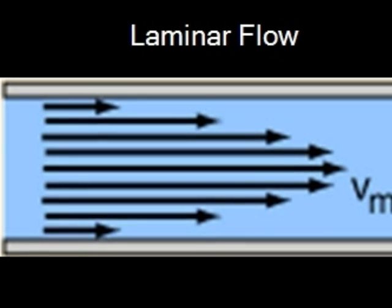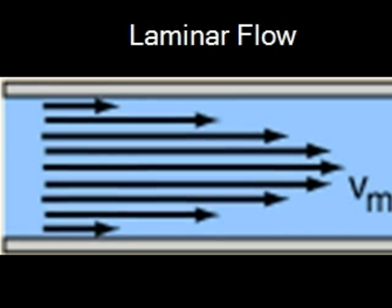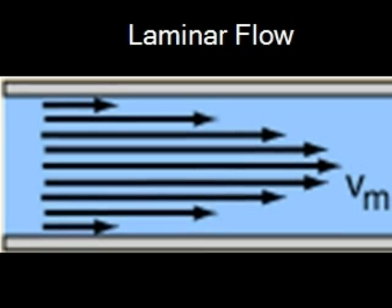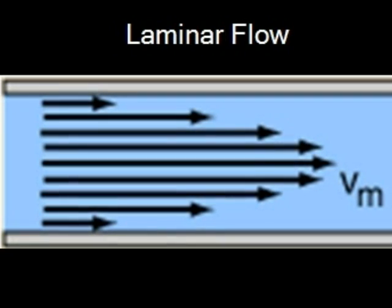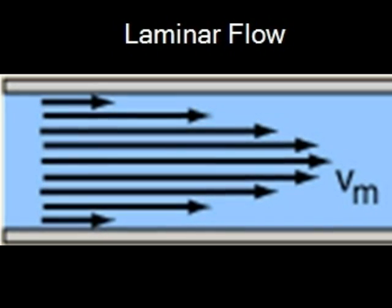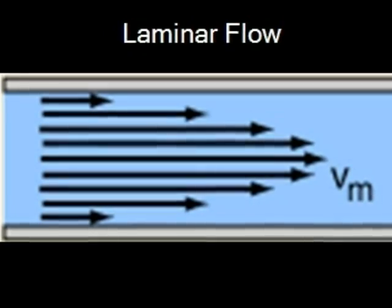Laminar flow is a theory that fluids act in layers. The bottommost layer, in the case of air, acts as a buffer between the wing and the drag-causing higher velocity air above it.